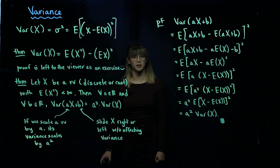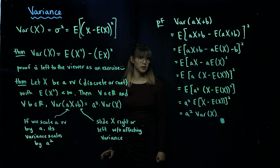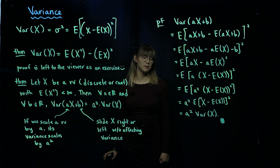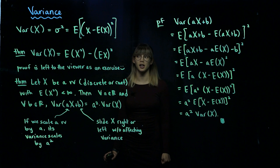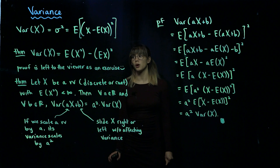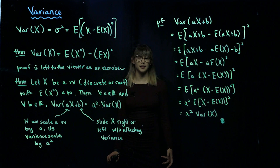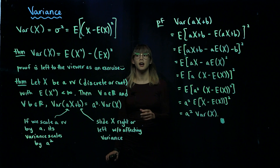We've discussed expected value, which is a measure of center for a random variable, and now we're going to discuss measures of spread. In particular, we're going to talk about variance. In an applied stats class you usually talk about standard deviation when talking about spread,